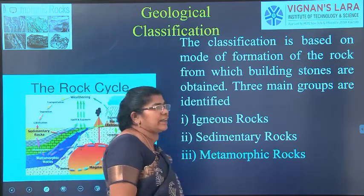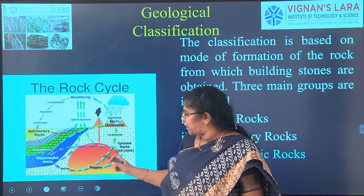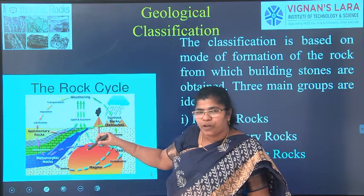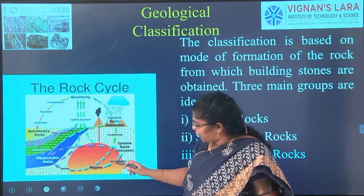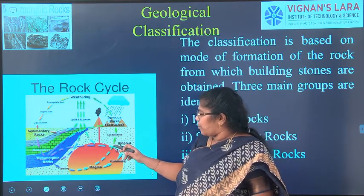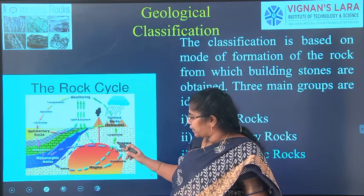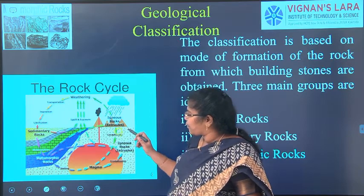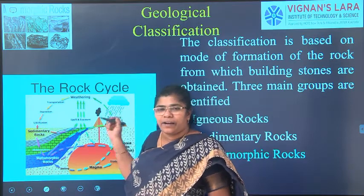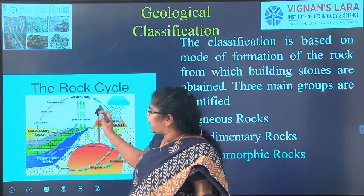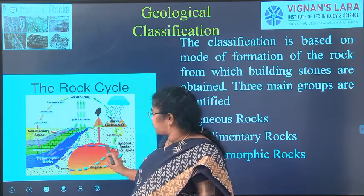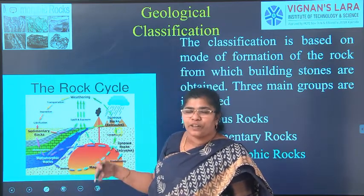Hot magma coming out through a volcano forms extrusive rocks. When the magma solidifies under the earth's surface we call it intrusive rocks. Intrusive rocks found around 2 kilometers under the earth's surface are called hypabyssal rock. Extrusive rocks undergo weathering and erosion, are transported and deposited elsewhere — that is called sedimentary rocks. Sedimentary and igneous rocks that undergo very high heat and temperature cause metamorphic rocks.